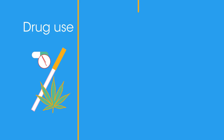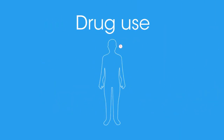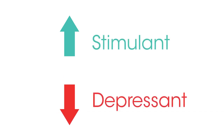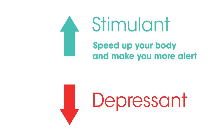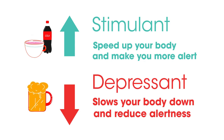Our reflex action to touch takes about 0.15 seconds; to sound it's about 0.17 seconds; and to sight, 0.25 seconds. Several things can alter the response time to a stimulus in everyday life: drug use, tiredness, or distraction. A drug is any substance that when ingested alters the way the body performs. Drugs may be classified as stimulants, which keep the body awake and alert and may reduce reaction times, or depressants, which reduce alertness and lengthen response times. For example, caffeine is a stimulant and alcohol is a depressant.